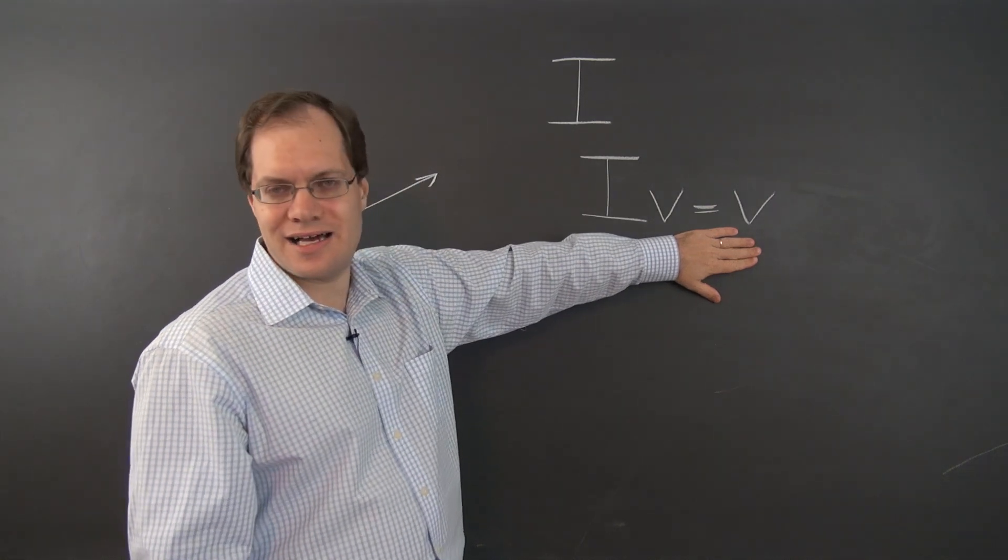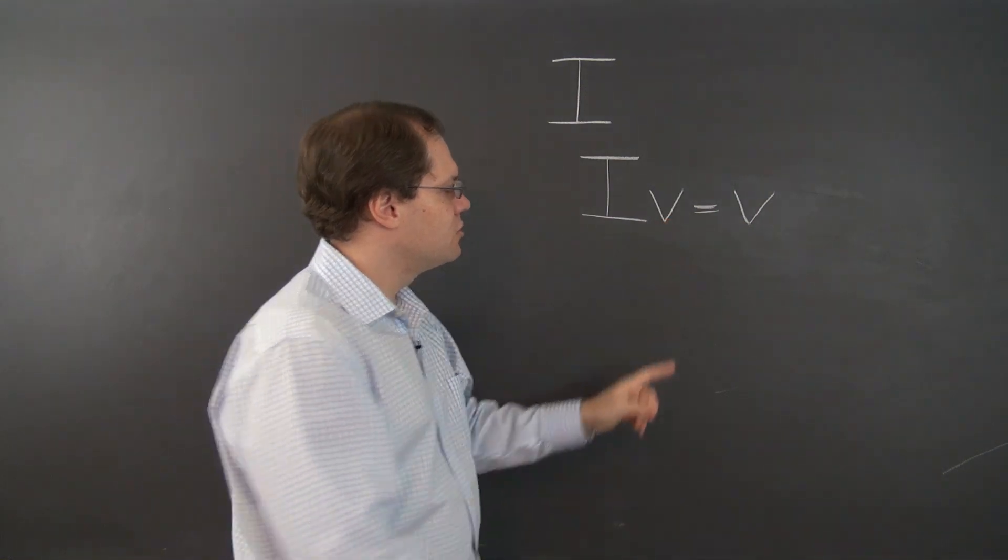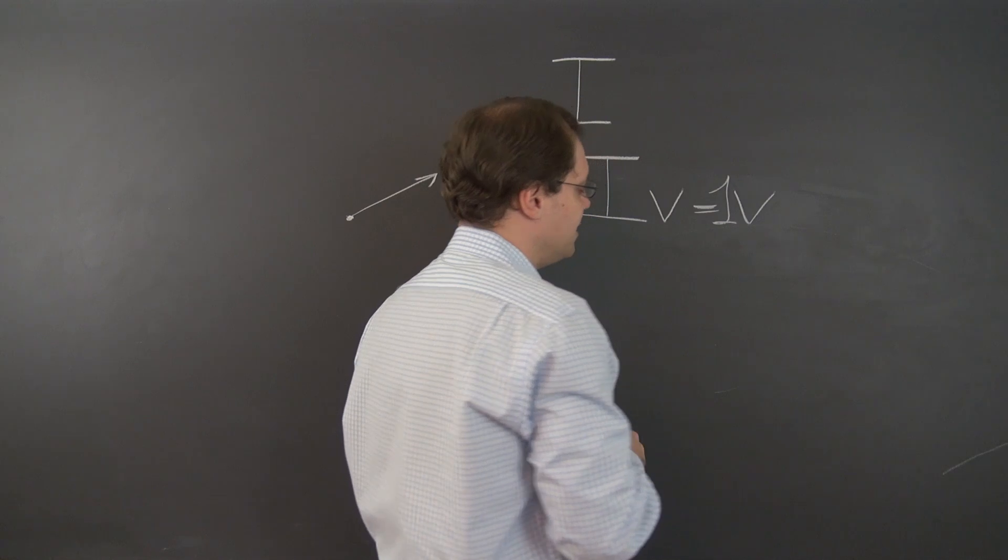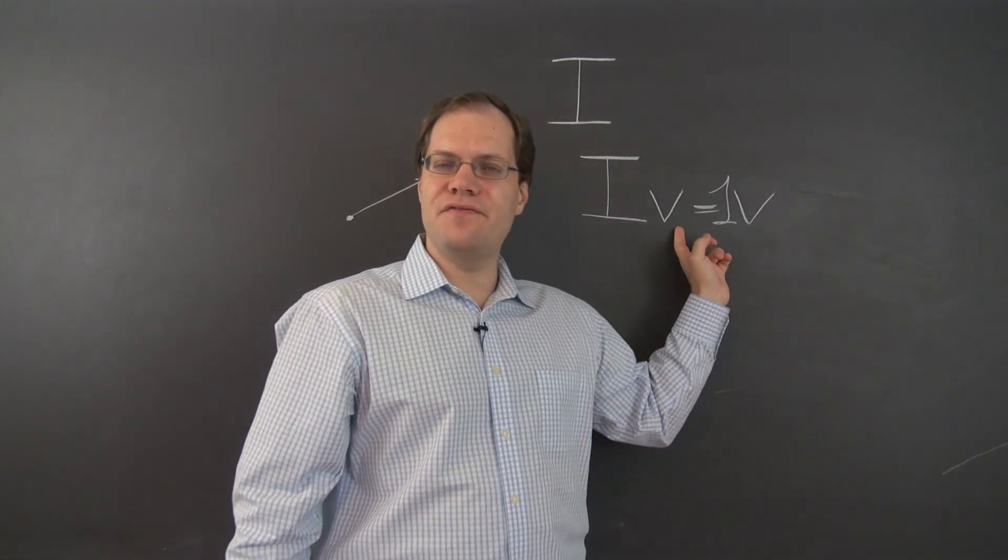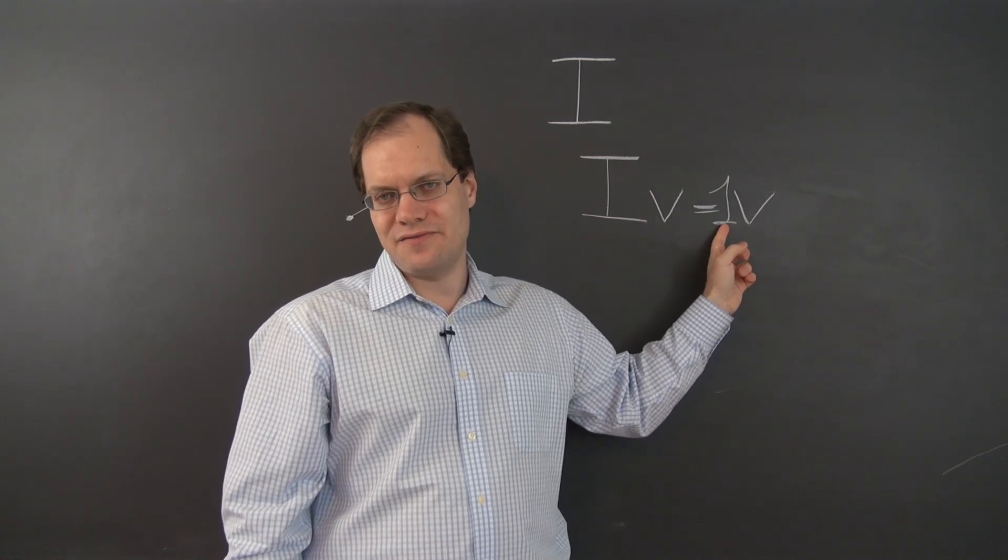So you can think of it as the output is one times the input. So every vector is an eigenvector with one, the corresponding eigenvalue.